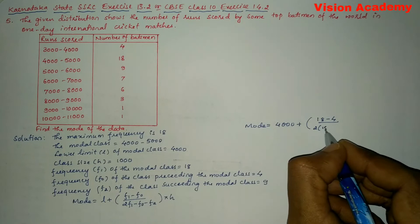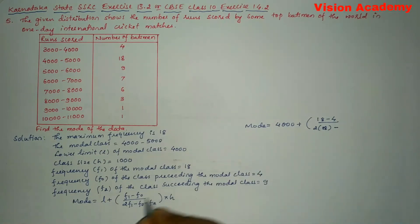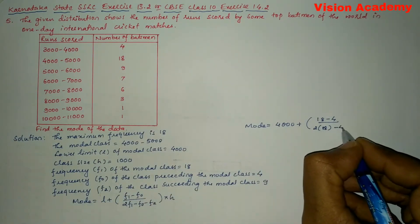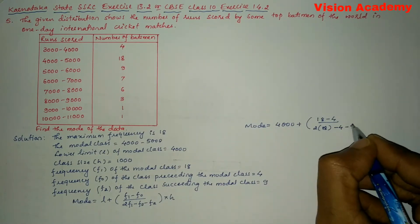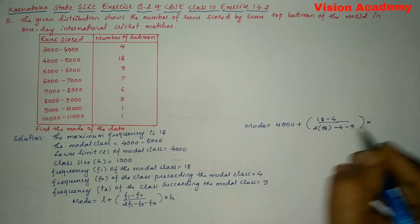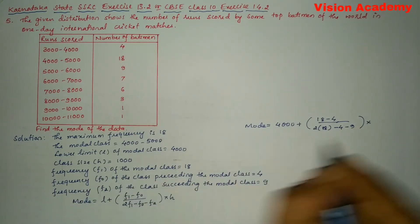...minus f0 is 4 minus f2 is 9 times h which is the class size 1000.